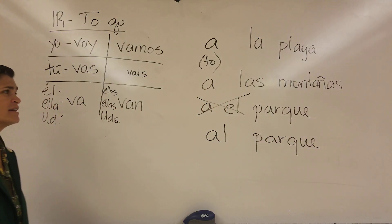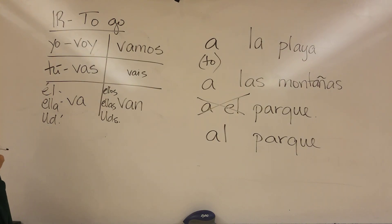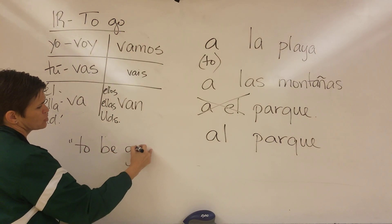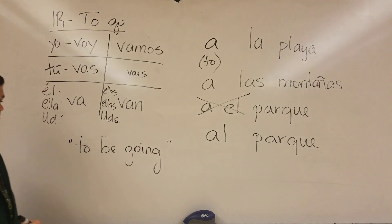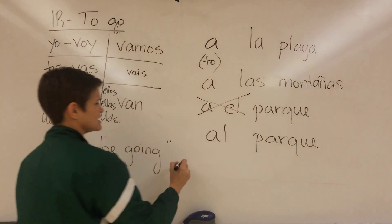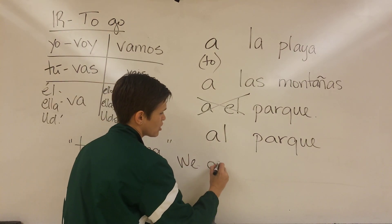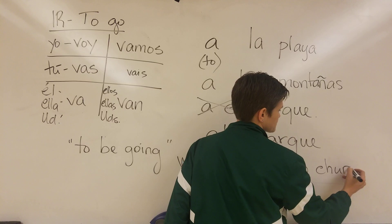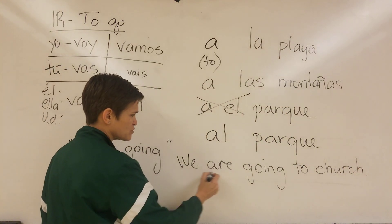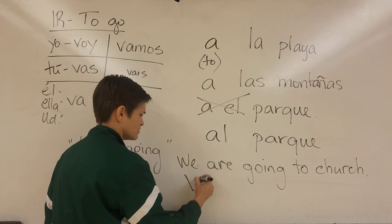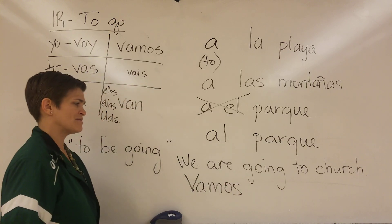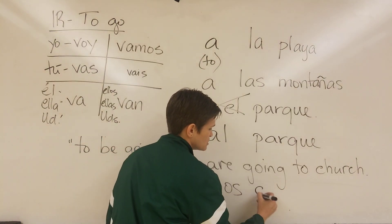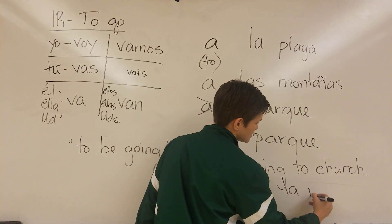So when you're going somewhere masculine, instead of a el, it'll be al. I also want you to notice that this is not just to go — this is to be going. The -ing is already part of the verb. So if we have a sentence like we are going to church, a lot of times people ask how do we say we are — we don't worry about that. We just say vamos. That means we are going. All of that is included in the verb. So vamos, and then we do a — church is feminine, so it'll be vamos a la iglesia.